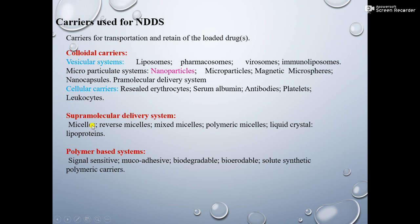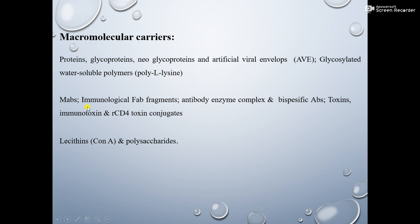Another one is supramolecular delivery system. In supramolecular delivery system there are micelles and reverse micelles, mixed micelles, polymeric micelles, liquid crystals and lipoproteins. In polymer-based systems: signal-sensitive, mucoadhesive, biodegradable and bioerodable, as well as soluble synthetic and polymeric carriers. Macromolecular carriers — these are proteins or glycoproteins, also called neoglycoproteins, artificial viral envelopes, or glycosylated water-soluble polymers called polylysines. And maps, immuno fragments, antibodies, enzyme complexes, bispecific toxins, amino toxins, RCD4 toxin conjugates, lectins, and polysaccharides also come under macromolecular carriers.